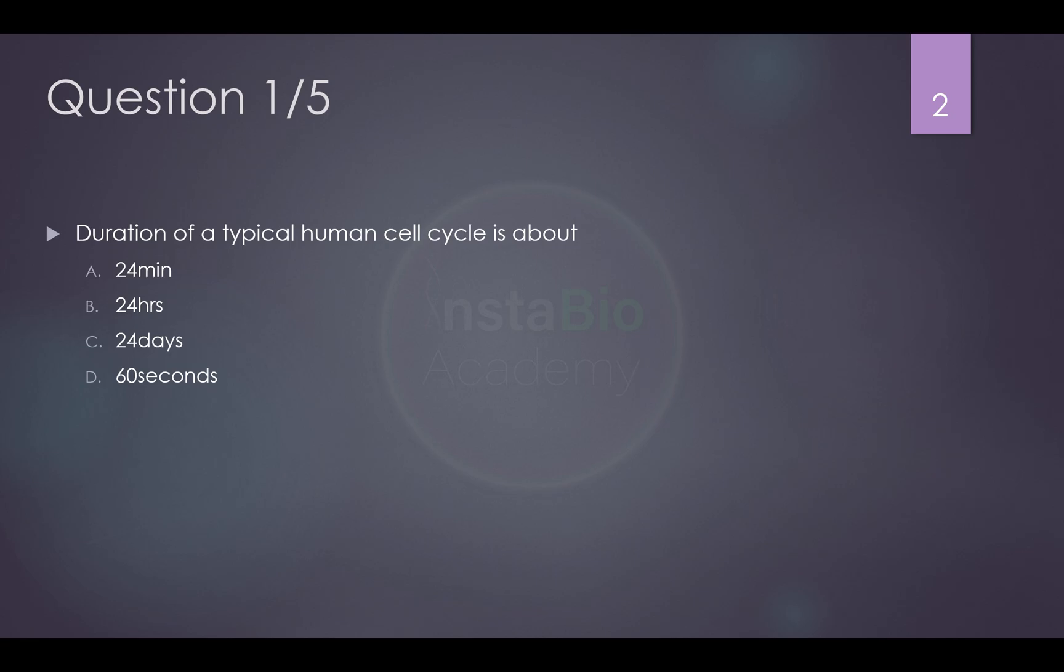So the first question is, duration of a typical human cell cycle is about. Now let me take a decent color. So typical cell cycle, this is a fact-based question, the answer is 24 hours.